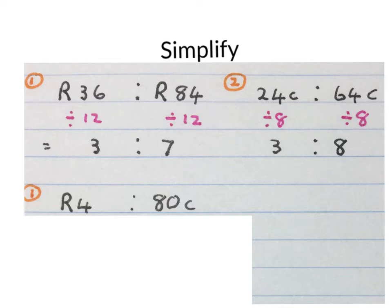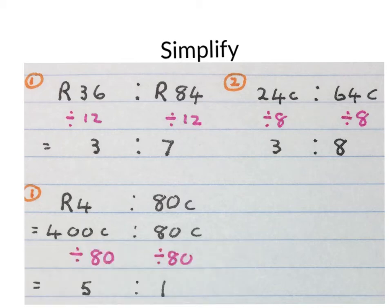When we get a ratio of 4 Rand to 80 cents, we convert both of them to the same unit, cents. So we have 400 cents to 80 cents. Then the highest common factor here is 80. So I divide 80 into both of them. The simplified version is 5 to 1.